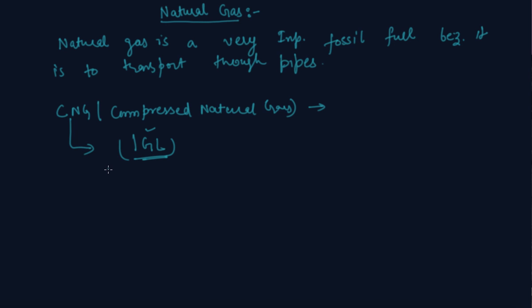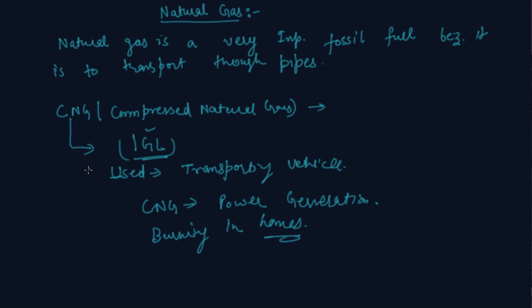CNG is used in vehicles and transporting vehicles. CNG is also used in power generation. It can also be used for burning in homes because it can be directly transported through pipes. These are the uses of CNG.